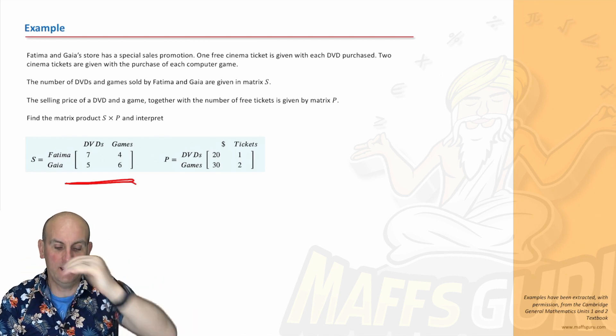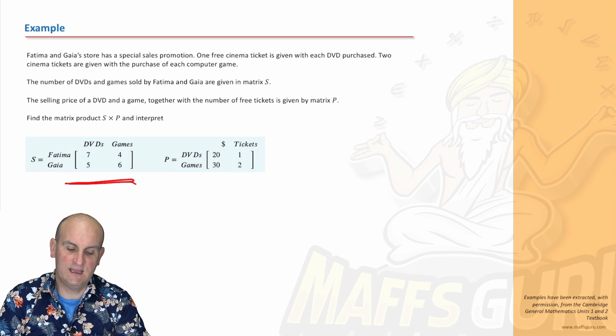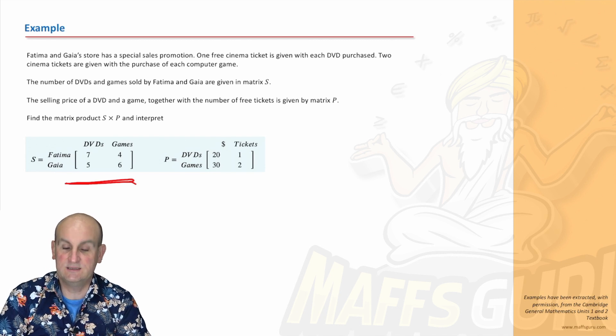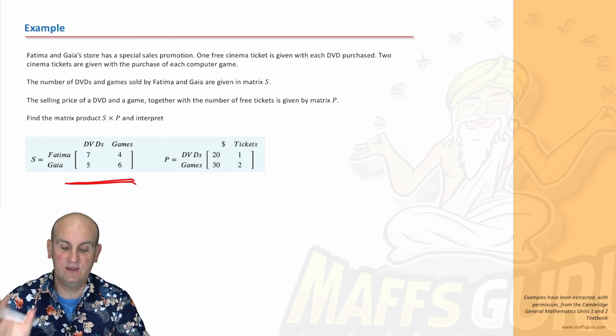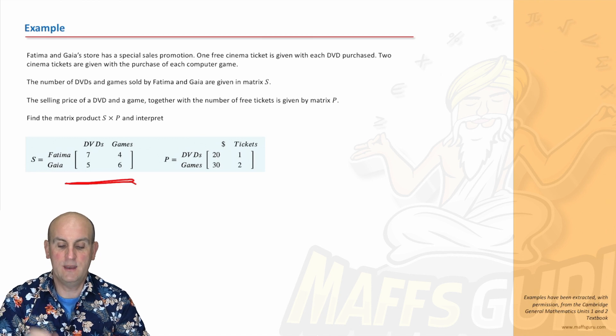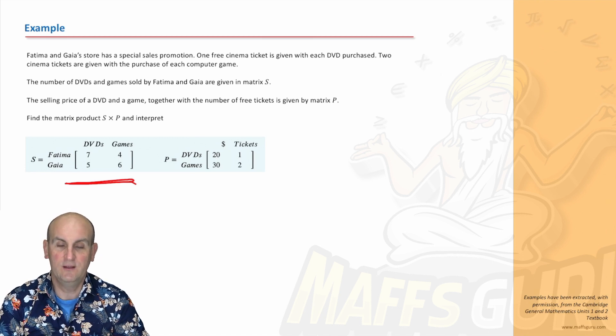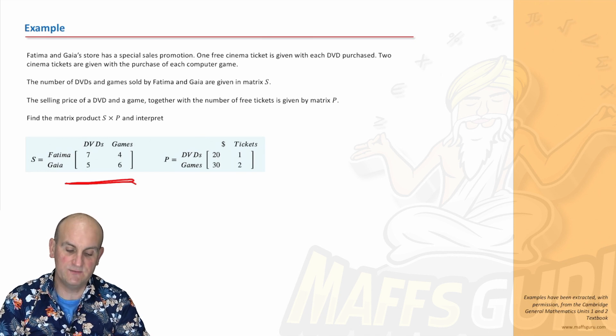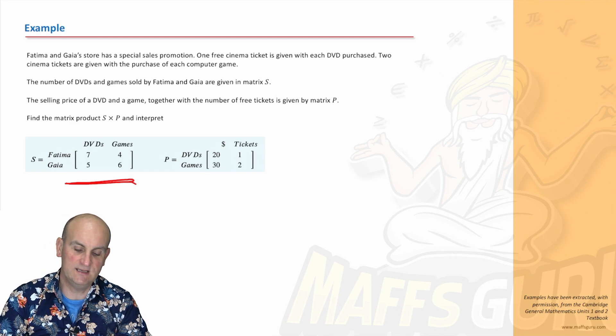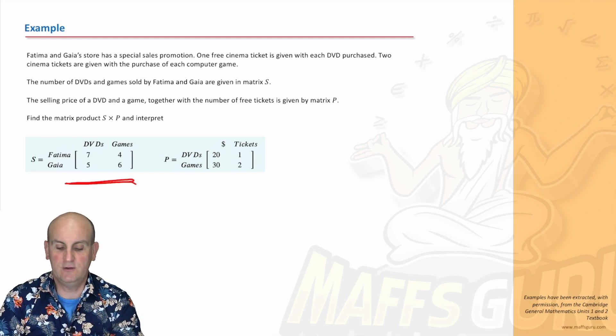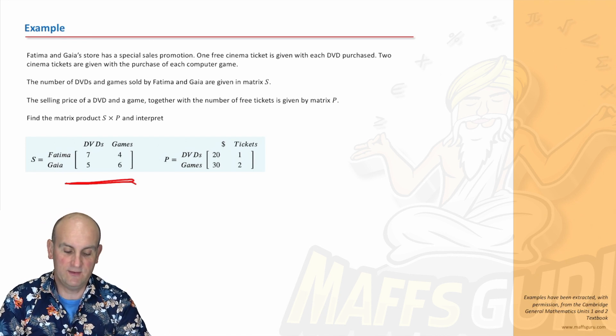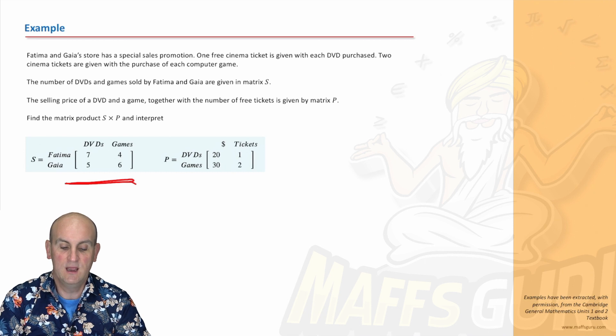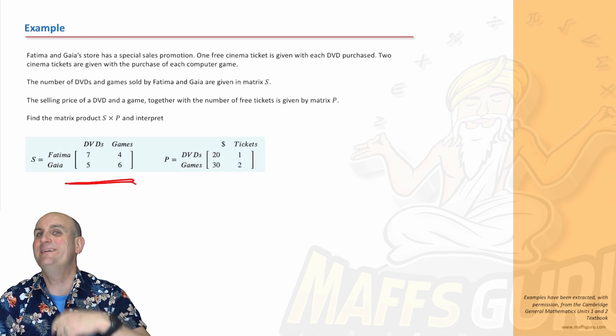The selling price of a DVD and a game together with the number of free tickets is given by Matrix P. So we've got two matrices. The DVDs are $20 with one free ticket, games are $30 with two free tickets. I'd be loading up on games myself.